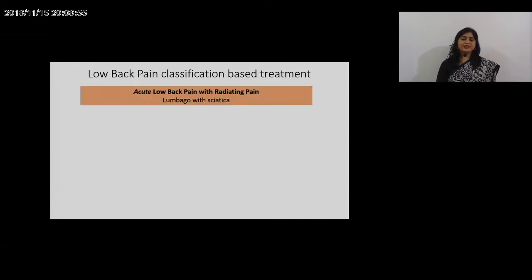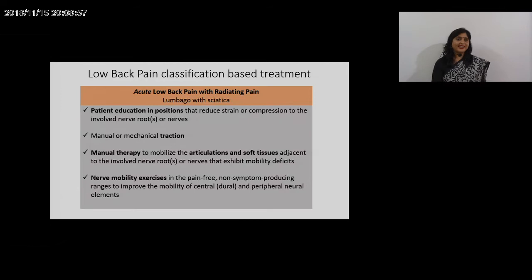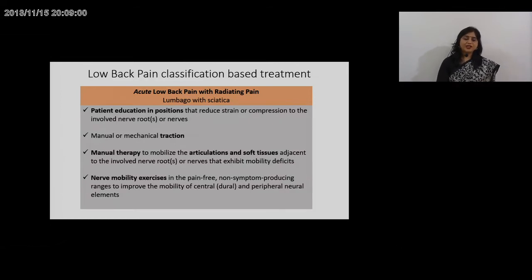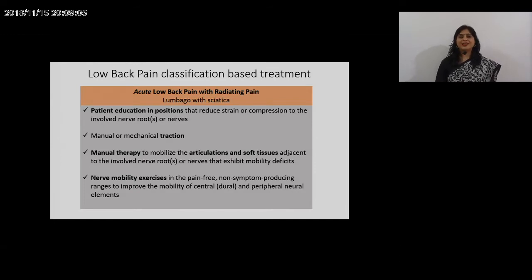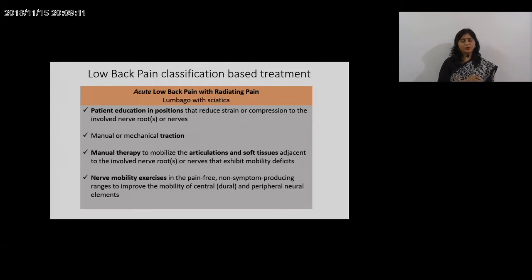The next category is acute low back pain with radiating pain — lumbar radiculopathy or sciatica. Patient education on positions that reduce strain or compression on the involved nerve root is important. For example, in the supine position with hip flexion, placing a pillow below the thighs reduces strain on the lumbar spine and makes the patient feel better.